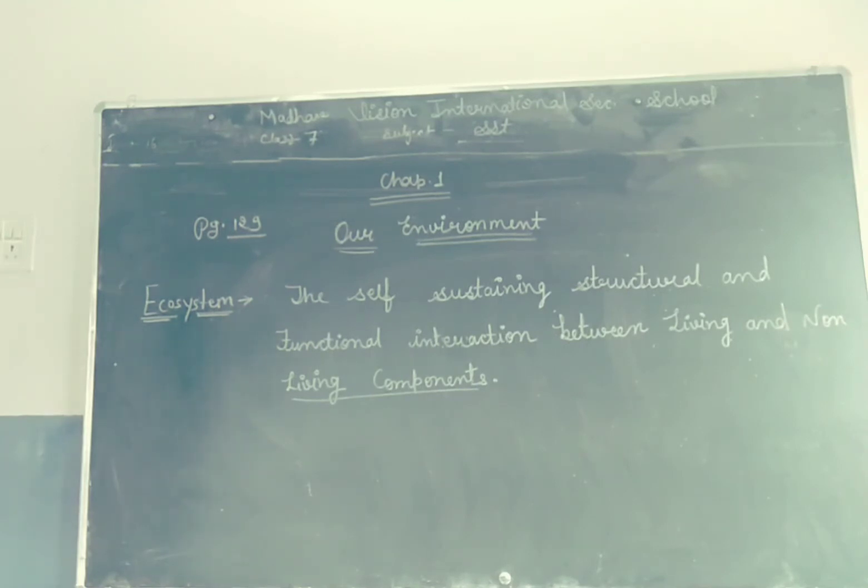Now, everyone open your book, page number 129. Ecosystem is a system created by the interaction of all living organisms with one another and with all the biotic elements of the environment in which they live. All plants, animals depend on each other and on their immediate surroundings of the natural environment.